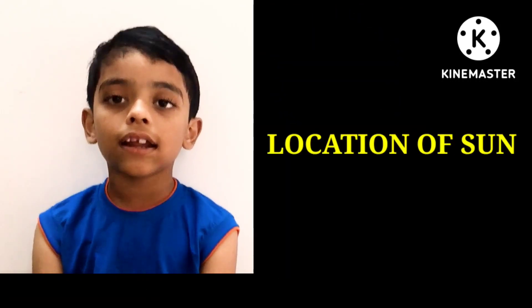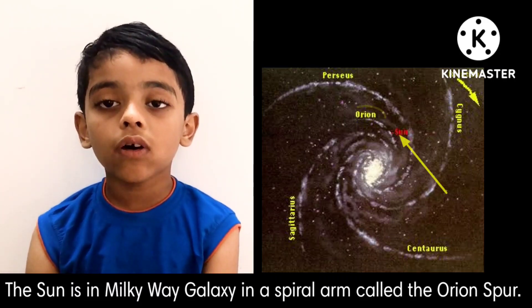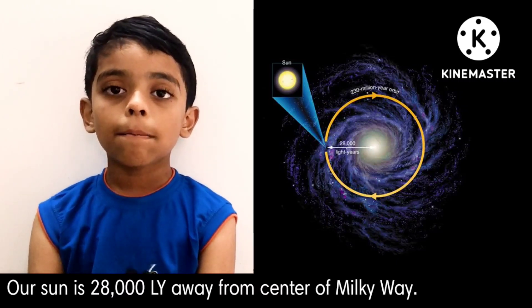Location of Sun: The Sun is in the Milky Way galaxy in a spiral arm called Orion Spur. Our Sun is 28,000 light years away from the center of Milky Way.